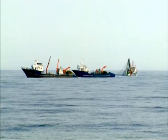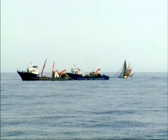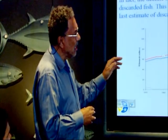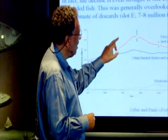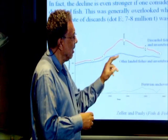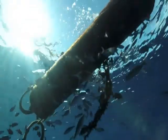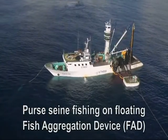Bigeye tuna are in trouble. They're being overfished, and scientists have asked the fishing industry to reduce the catch of bigeye tuna. Purse seine fishing on FADs must be banned to protect bigeye tuna and other species from overfishing.